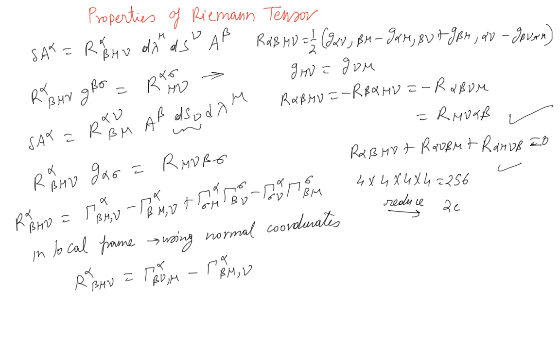An important thing is that if R alpha beta mu nu equals zero, this implies flat space because you see it depends on the second partial of the metric.